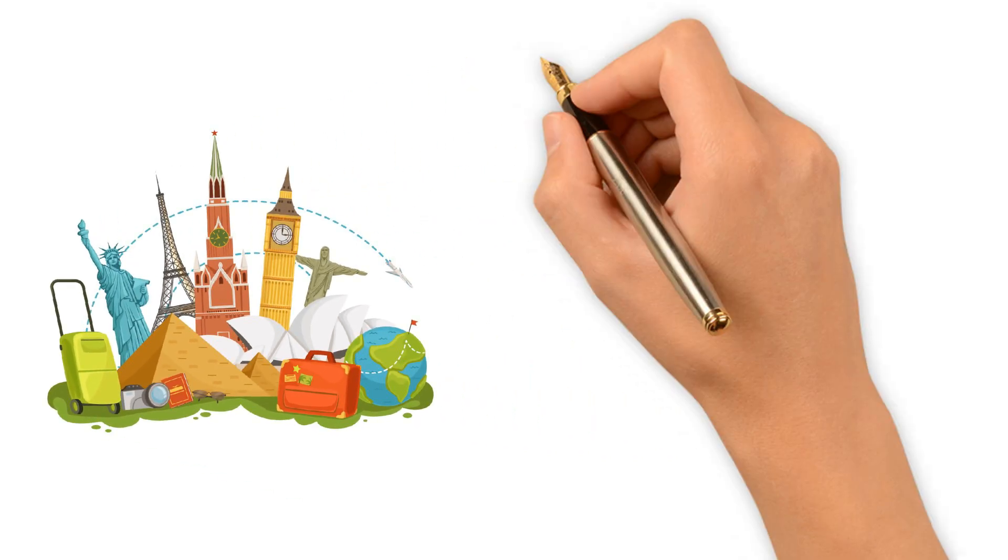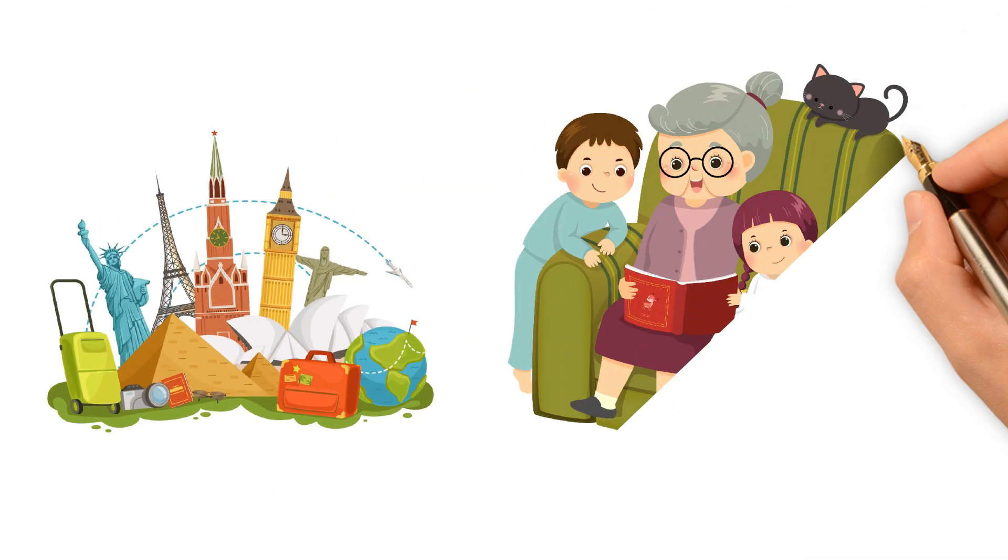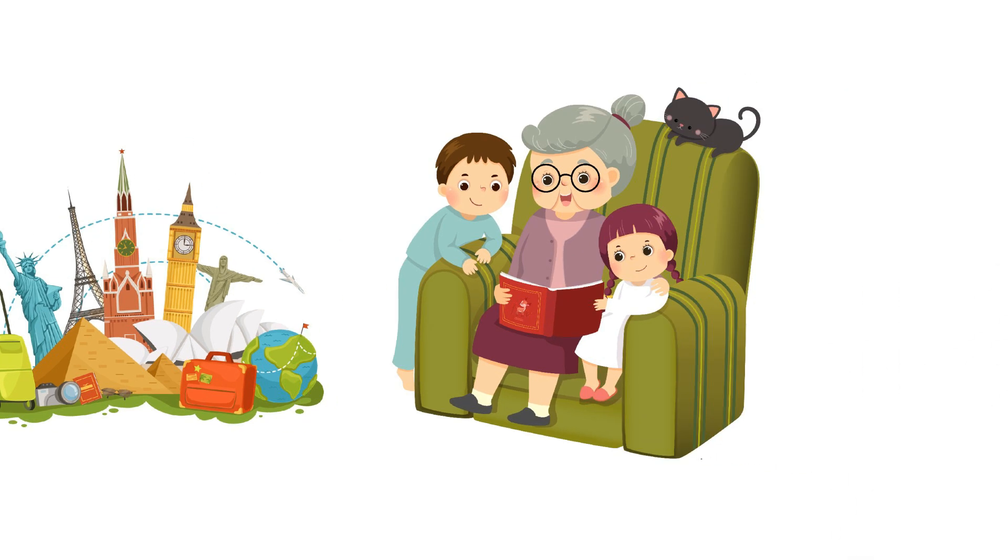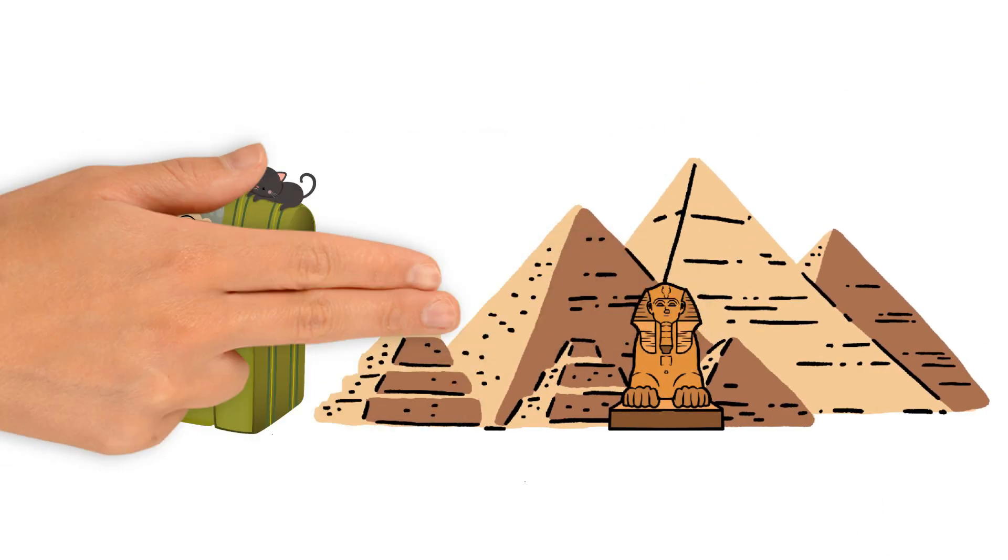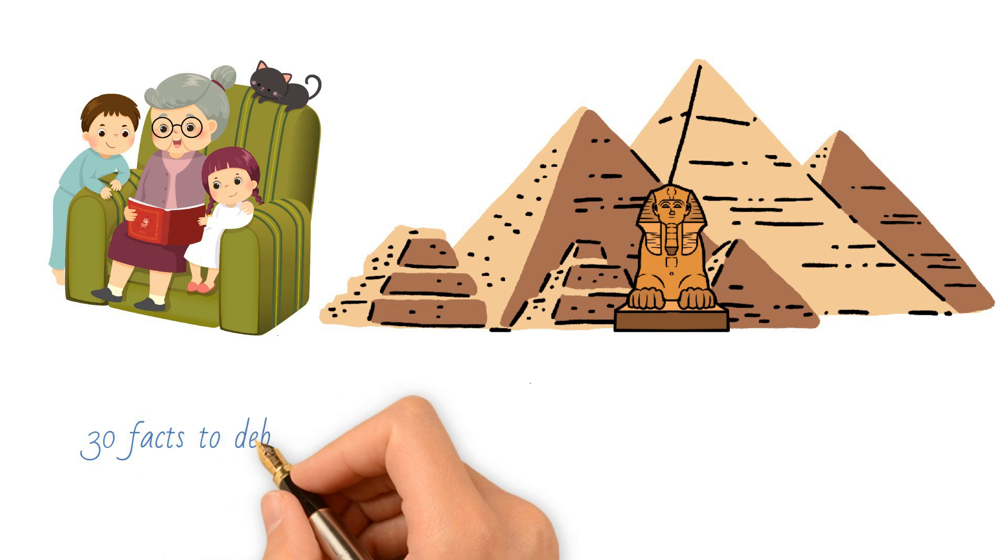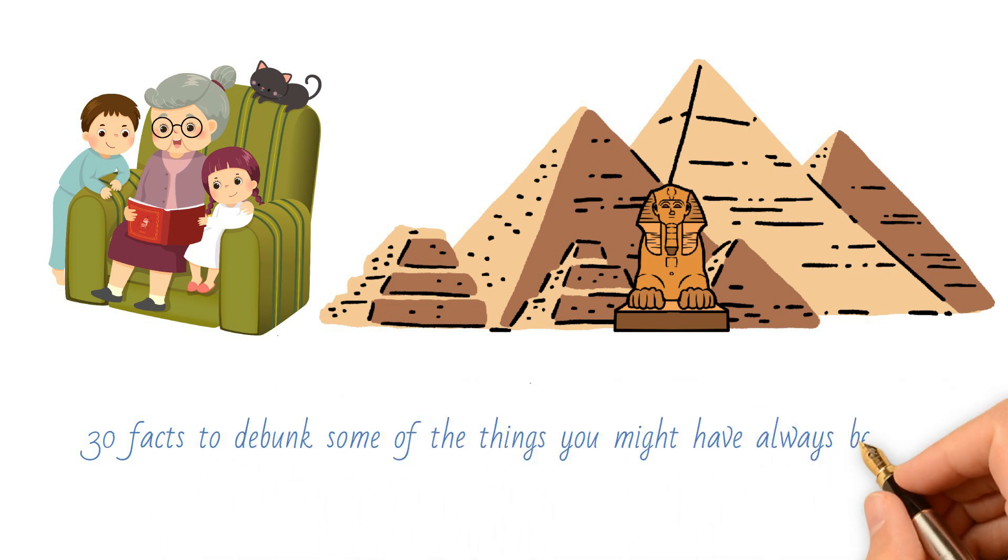Our world is brimming with fascinating truths, but it's also littered with misconceptions that get passed down like family heirlooms. From childhood warnings to historical half-truths, here are 30 facts to debunk some of the things you might have always believed.